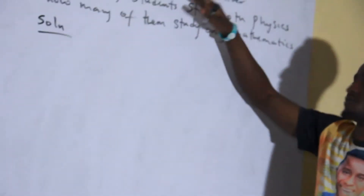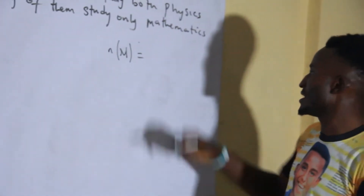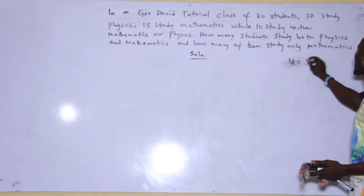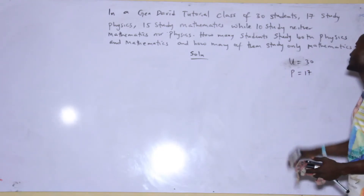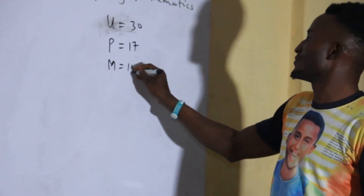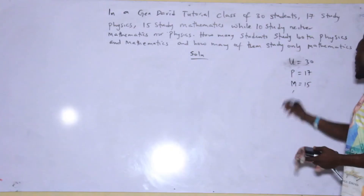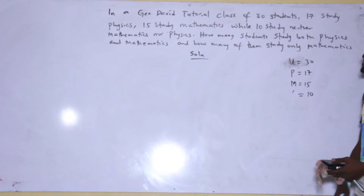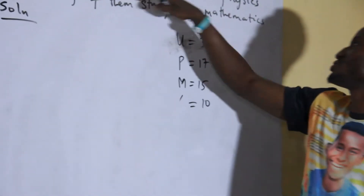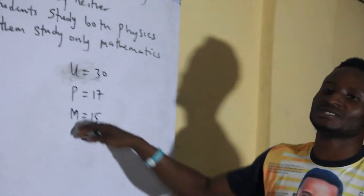The question says: in a generic tutorial class of 30 students — that means the universal set U equals 30. The number of those that study physics is 17, and the number of those that study mathematics is 15. And 10 study neither, meaning they don't study at all. The question asks: how many students study both physics and mathematics? That is, they are talking about the intersection of both physics and mathematics.